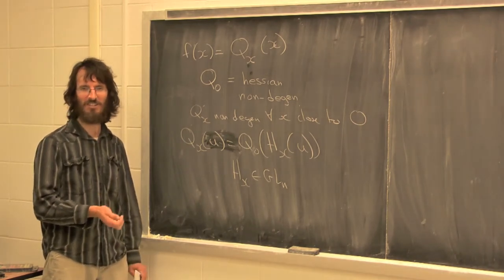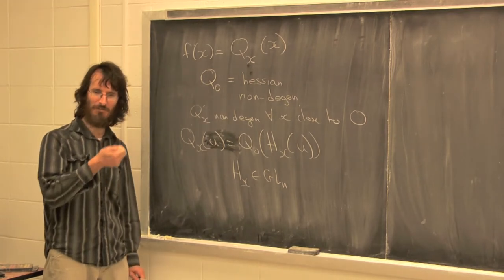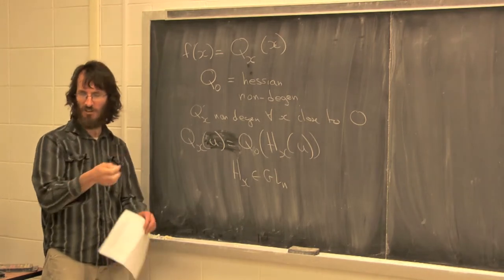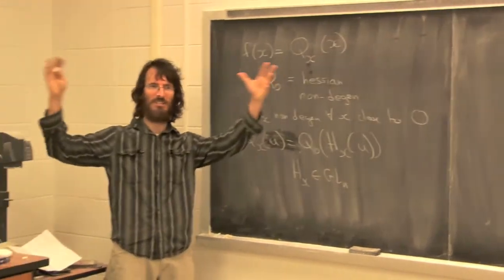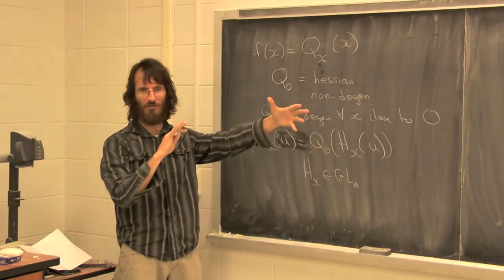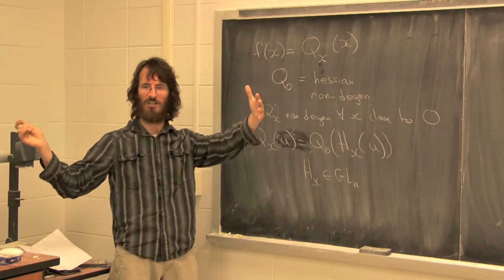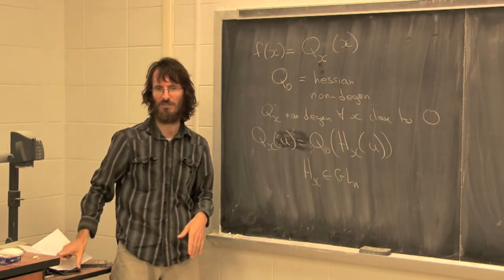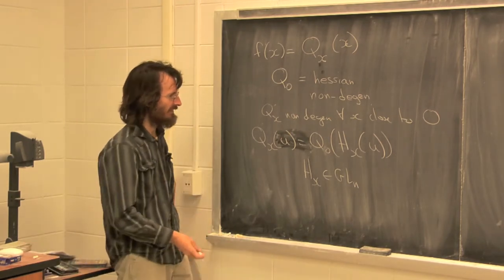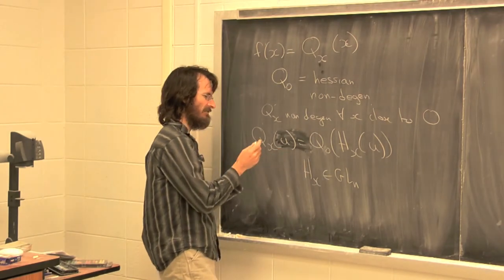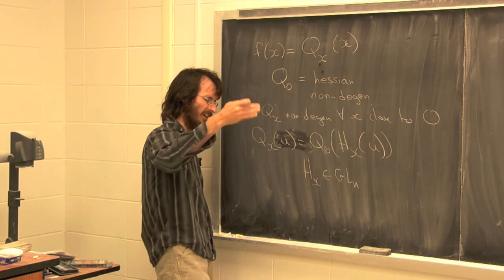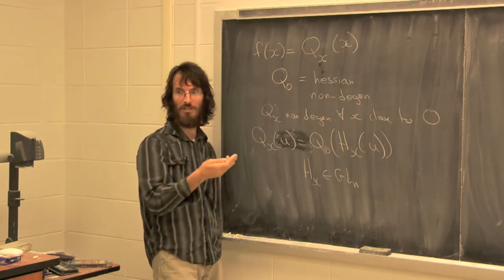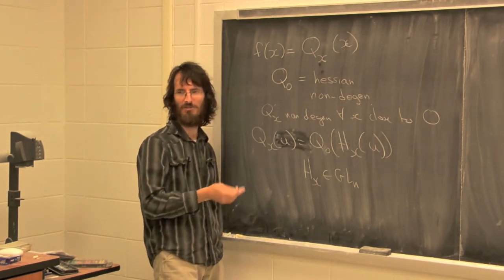Signature is a discrete quantity, so you can't change it continuously. The only way you can change signature is by first failing to be non-degenerate — by becoming degenerate. It's like these chambers inside the space of non-degenerate forms, with walls between them which are the degenerate ones. The signature jumps across those walls. So the partitioning of non-degenerate forms according to signature corresponds precisely to the orbits under GL.